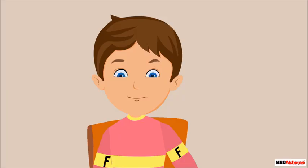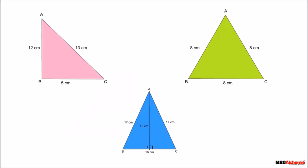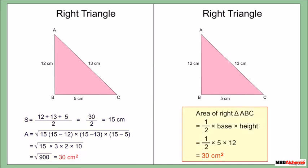Sid asks if Heron's formula can be used for other types of triangles as well. Neil's father replies yes. Using Heron's formula, the area of the right triangle is 30 cm², which is the same result obtained by applying the standard formula for a right triangle.